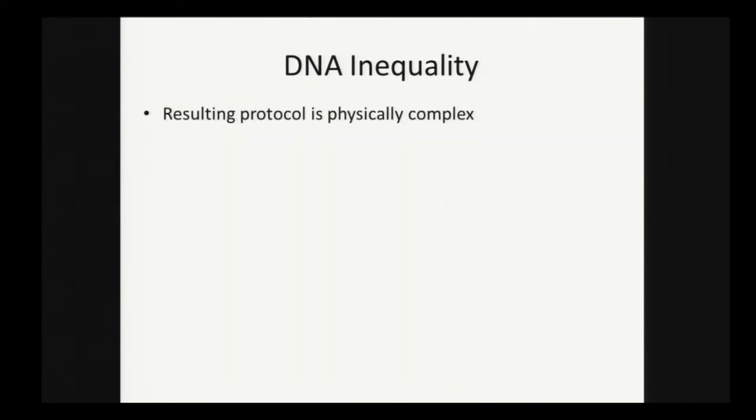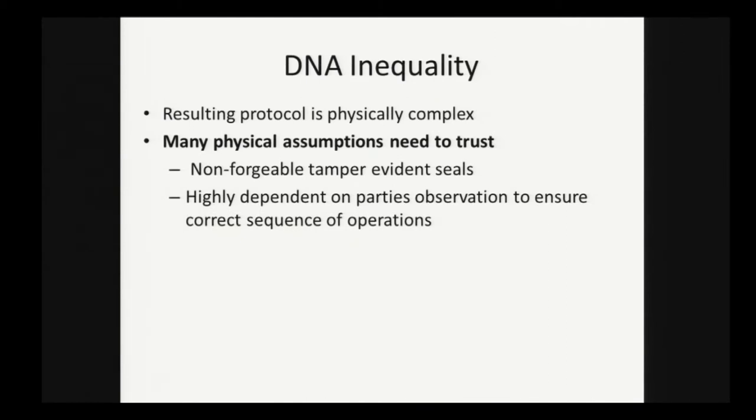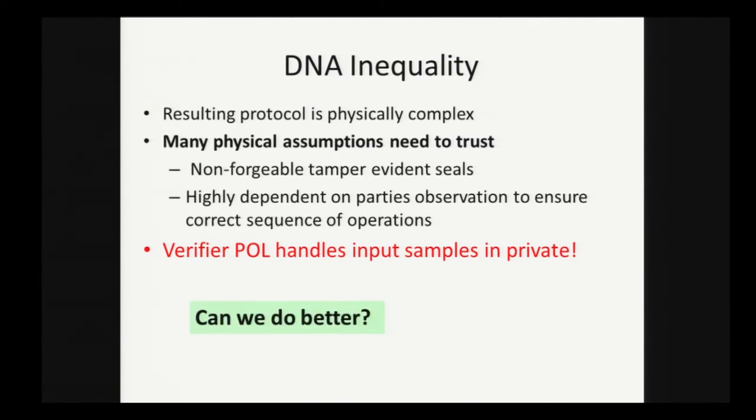To say the least, the resulting protocol is extremely physically complex. There are many physical assumptions you need to trust here, and most of all the verifier, the police, get to handle the samples in private. You're entirely reliant on this tamper-evident functionality to prevent the police from secretly just taking samples of the suspect's DNA. Can we do better?